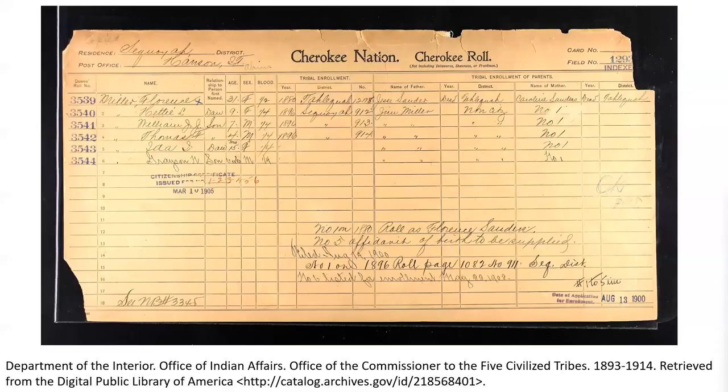DPLA has an enrollment for a Cherokee census card by blood — meaning blood lineage — and this card focused on Florence's family. Here is what the Cherokee Nation roll cards look like: this is Sequoia district. Florence was already married; she is number 3539, 31 years of age, considered half Cherokee by blood. Her tribal enrollment was in 1880 when she enrolled. Her father was Jesse Saunders and her mother was Carolyn Saunders. Some of her children are also listed: Hedy, William, Thomas, and Ida — she's adding them to the official rolls of the Cherokee Nation. This image is found through DPLA, coming from the Office of Indian Affairs, Office of the Commissioner of the Five Civilized Tribes, Department of the Interior.